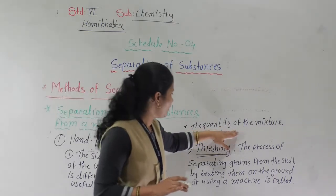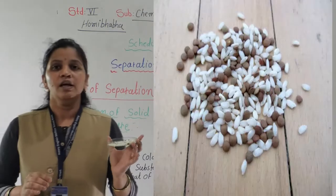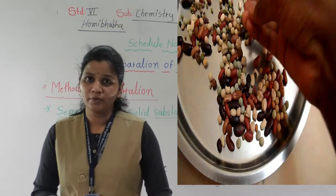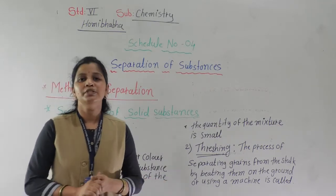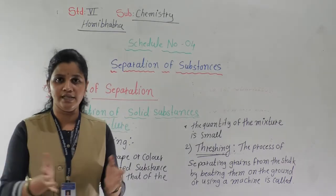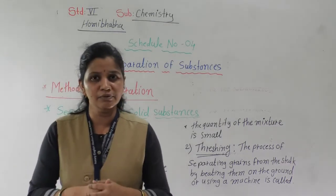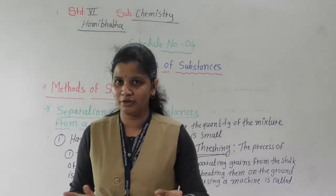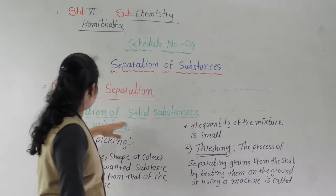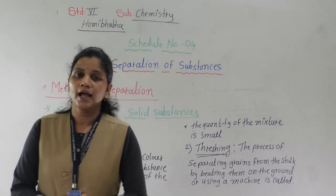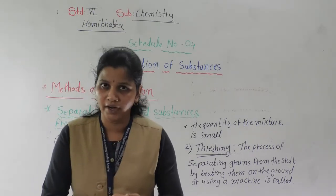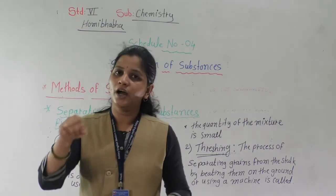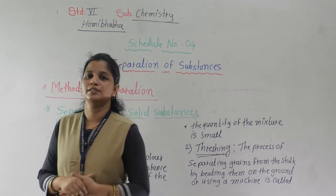The hand picking method is useful when the quantity of the mixture is small. I have taken a small amount of rice here, so the quantity is small and we can easily separate it. But suppose the quantity is more — 1 kg, 2 kg, 4 kg of rice — then it would need much more time to separate the unwanted things, so this method is not useful for large quantities. So, hand picking is only useful when the quantity is small and the shape, size, and colour of both substances are different.